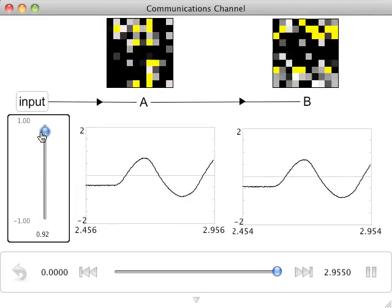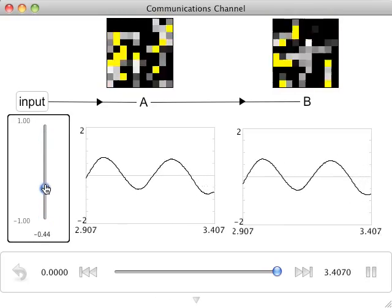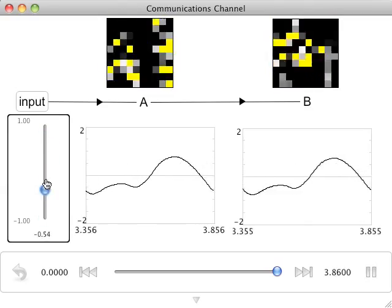This is a nice demonstration that even though the information carried about a variable can be the same in two populations, their activities can be quite different. This is because different neurons in these populations have very different tuning.